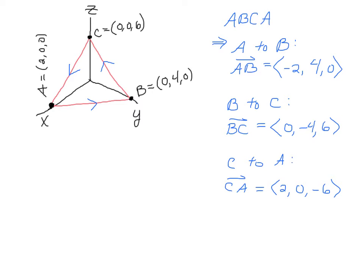Then if we go from B to C, that's from here to here, then if I subtract tail minus head, it will be -4 and -6 in the last two components. And then when we go from C to A, it will be tail minus head, so it's going to be A minus C. So it will be 2 minus 0, 0 minus 0, and 0 minus 6, so we get ⟨2, 0, -6⟩.